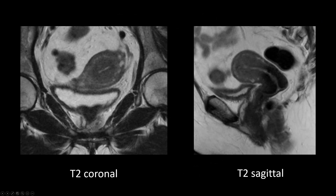Here's the MRI for that patient — T2 sagittal and coronal images. Fluid in the urinary bladder is bright on T2-weighted images. We can identify the uterine fundus, uterine body, lower uterine segment, cervical region, and the endocervical canal continuing into the endometrium. That dark area is the thickened junctional zone. When the junctional zone exceeds 12 millimeters in thickness, that's quite specific for adenomyosis. In this case it reached 13 millimeters.